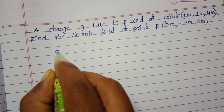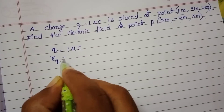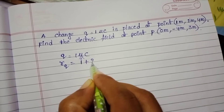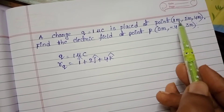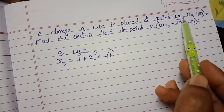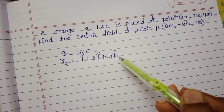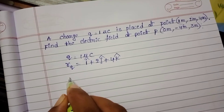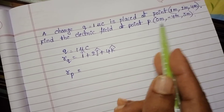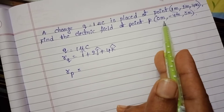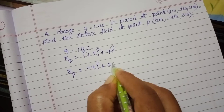The magnitude of the charge QE equals 1 microcoulomb, and the initial position of the charge is I-cap plus 2 J-cap plus 4 K-cap, because the point is 1 meter along the X-axis, 2 meters along Y, and 4 meters along Z. The position vector at point P has 0 meters along X, so it is minus 4 J-cap plus 3 K-cap.